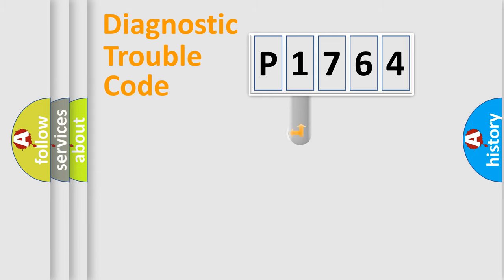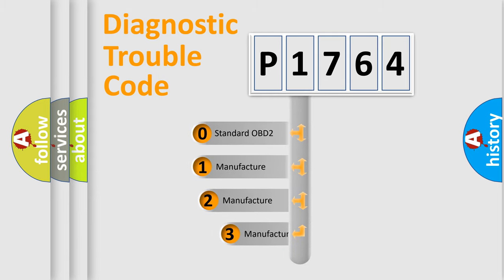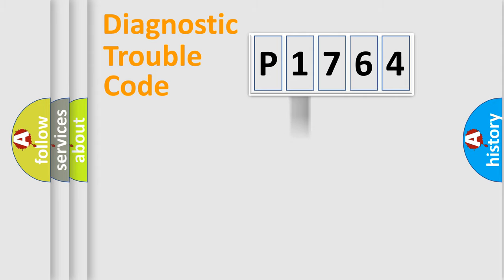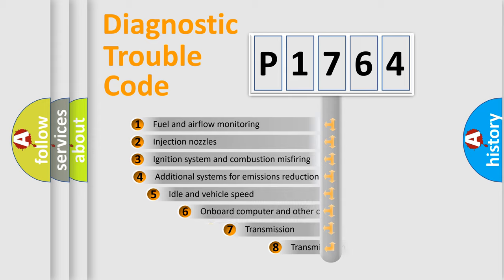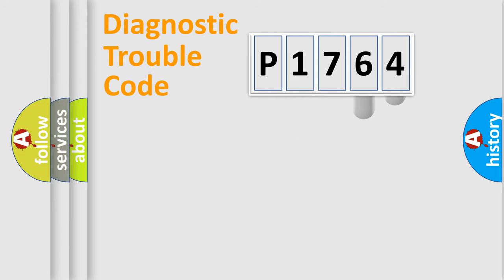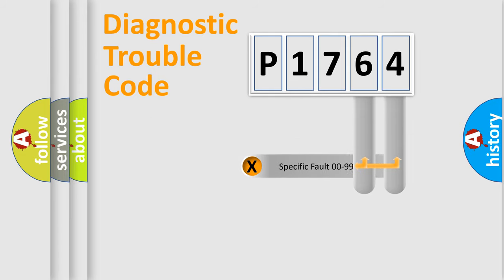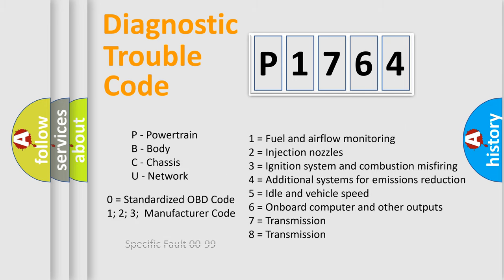This distribution is defined in the first character of the code. If the second character is expressed as zero, it is a standardized error. In the case of numbers 1, 2, or 3, it is a more specific car-manufacturer error. The third character specifies a subset of errors. The distribution shown is valid only for the standardized DTC code. Only the last two characters define the specific fault of the group. Such a division is valid only if the second character is expressed by the number zero.